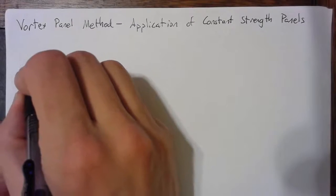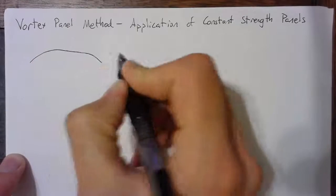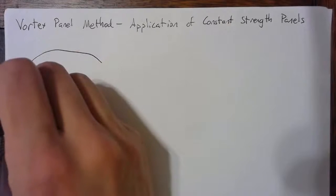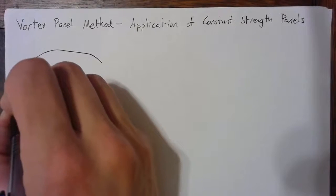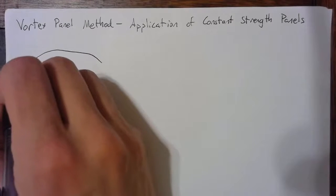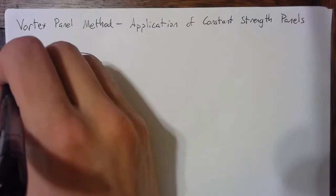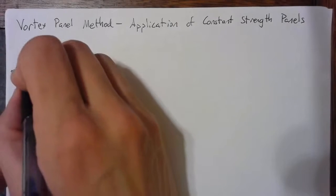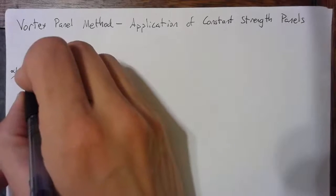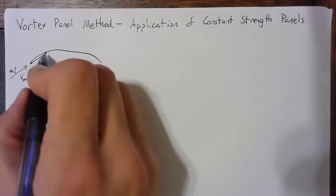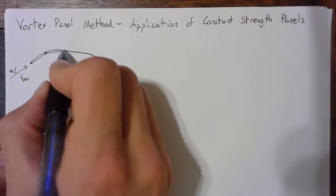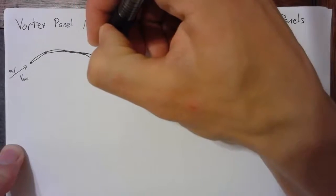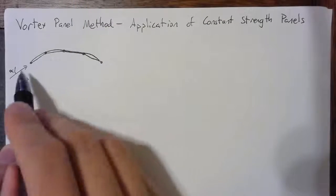What we're interested in with all this thin airfoil theory is the flow due to some camber line and some V infinity — some uniform flow that's at some angle of attack, alpha. With the vortex panel method, we discretize this into a number of panels. In this case, let's say that we're discretizing our camber line into four panels.